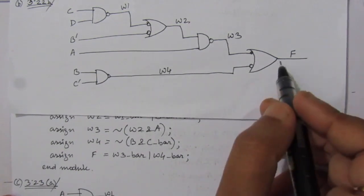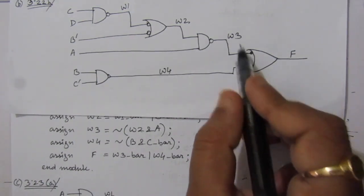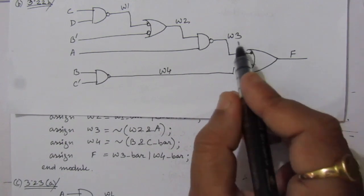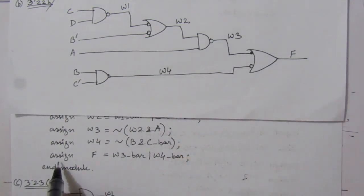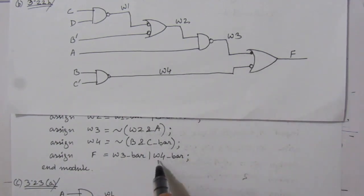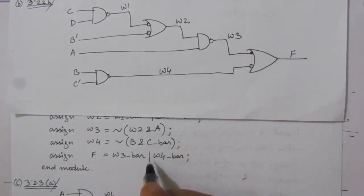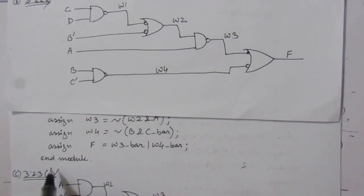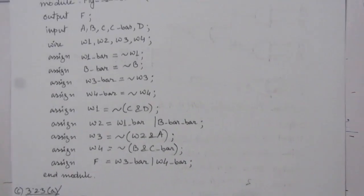Finally, we perform the OR operation between the two inverted inputs. We write: assign F = W3-bar OR W4-bar. Then we write endmodule. This completes the solution for the second part of the problem.